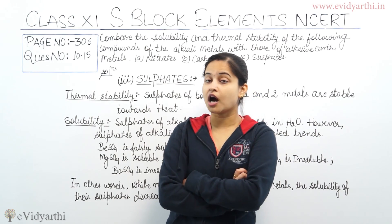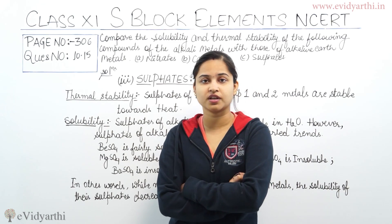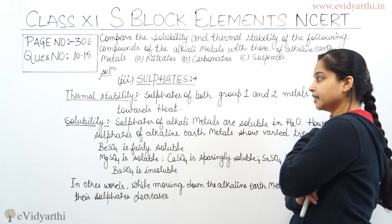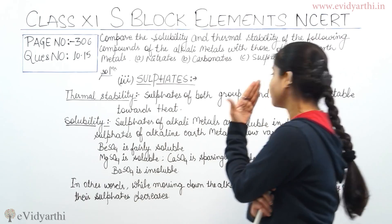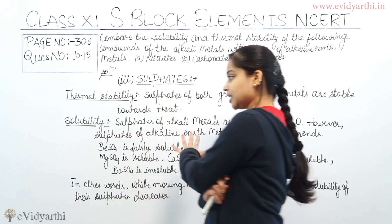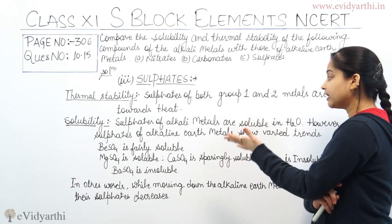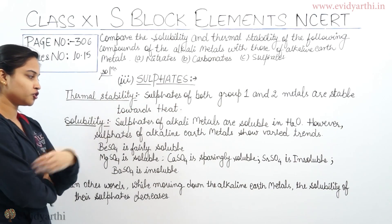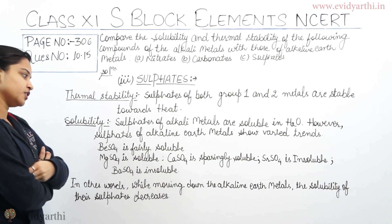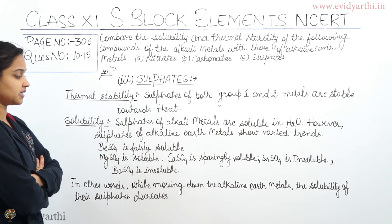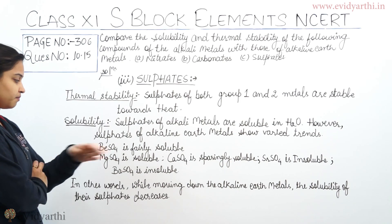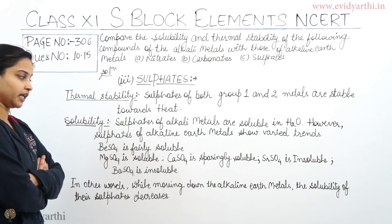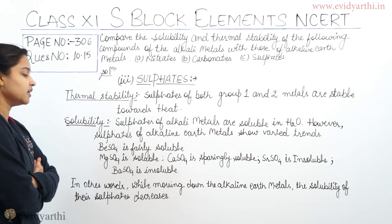Please have a look at the board. Sulfates of both group 1 and group 2 metals are stable towards heat. For solubility: sulfates of alkali metals are soluble in water. However, sulfates of alkaline earth metals show varying trends — BeSO₄ is fairly soluble, MgSO₄ is soluble, CaSO₄ is fairly soluble, SrSO₄ and BaSO₄ are insoluble. In other words, moving down the alkaline earth metals, the solubility of their sulfates decreases.